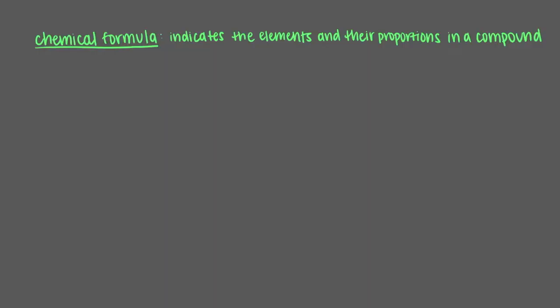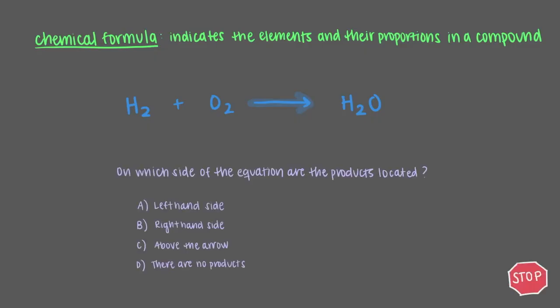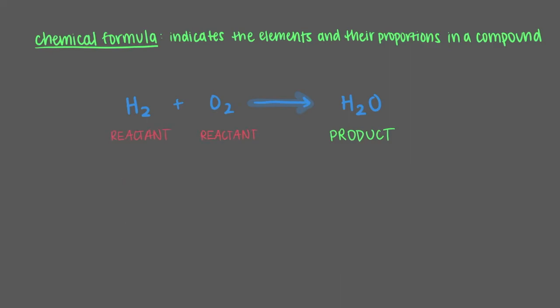We use the chemical formulas of the products and reactants to represent the chemical species involved, and we separate them by an arrow. Products are located on the right side of the arrow, and reactants are on the left. So this equation reads: hydrogen and oxygen react together to form water.